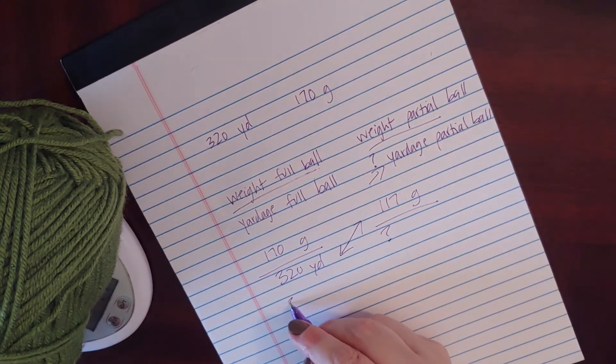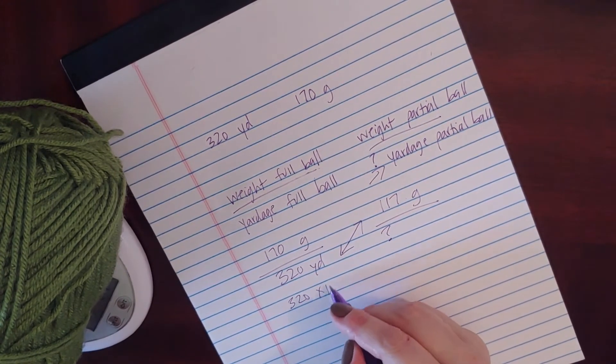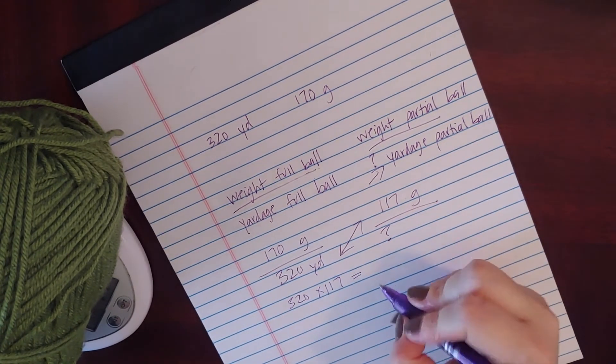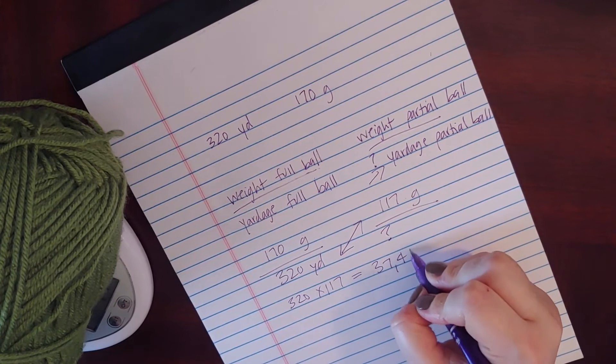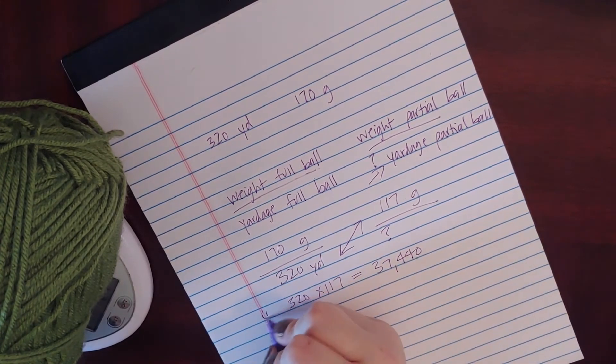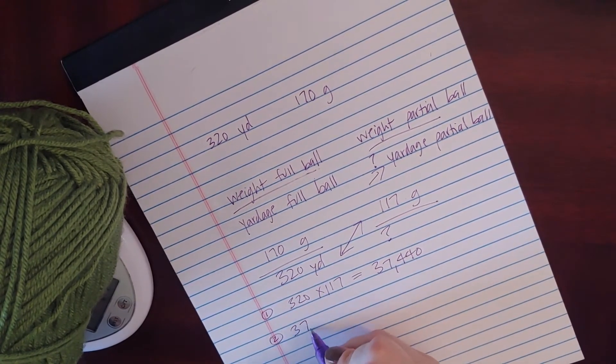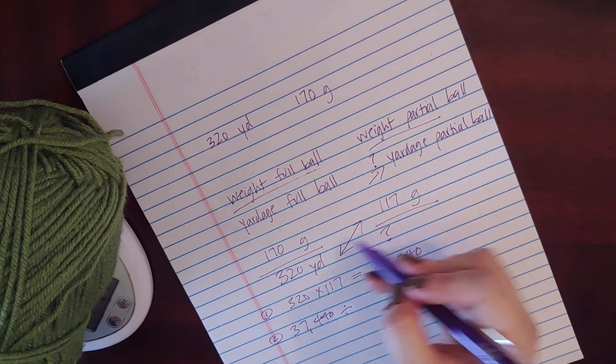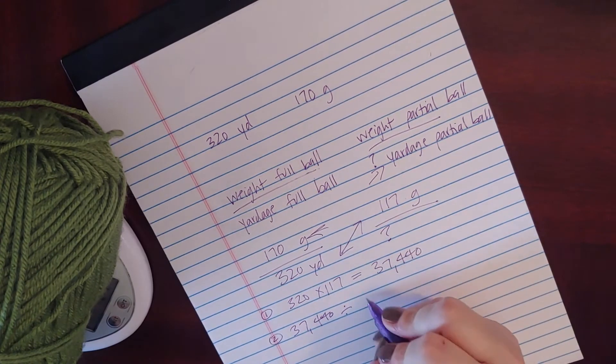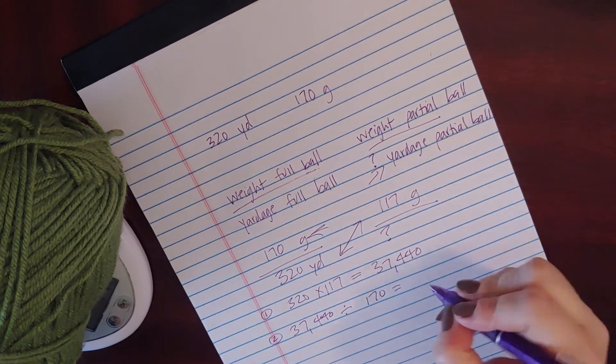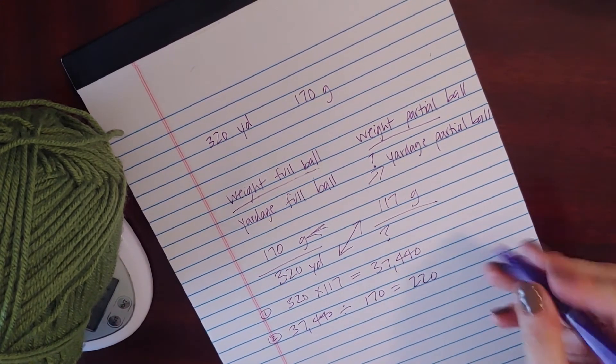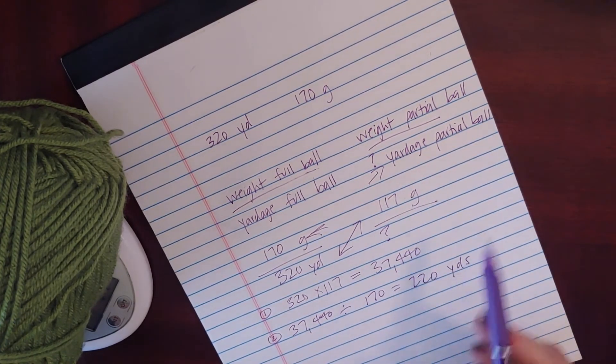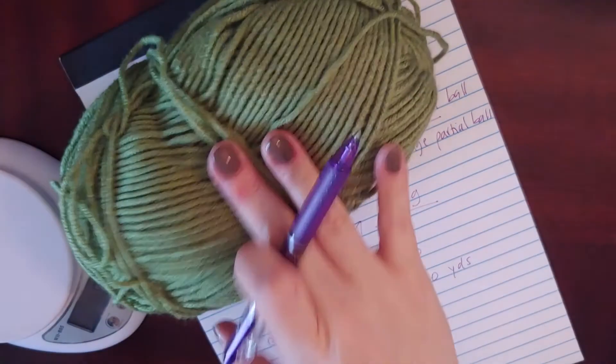Step one is to multiply these two numbers together. I'll get my calculator. It works out to 37,440. This is step one. And then step two, you're just going to take that answer and divide it by the number you didn't use last time, which is the 170. That equals 220 and some change, but that's going to give you that you have 220 yards in this partial ball of yarn.